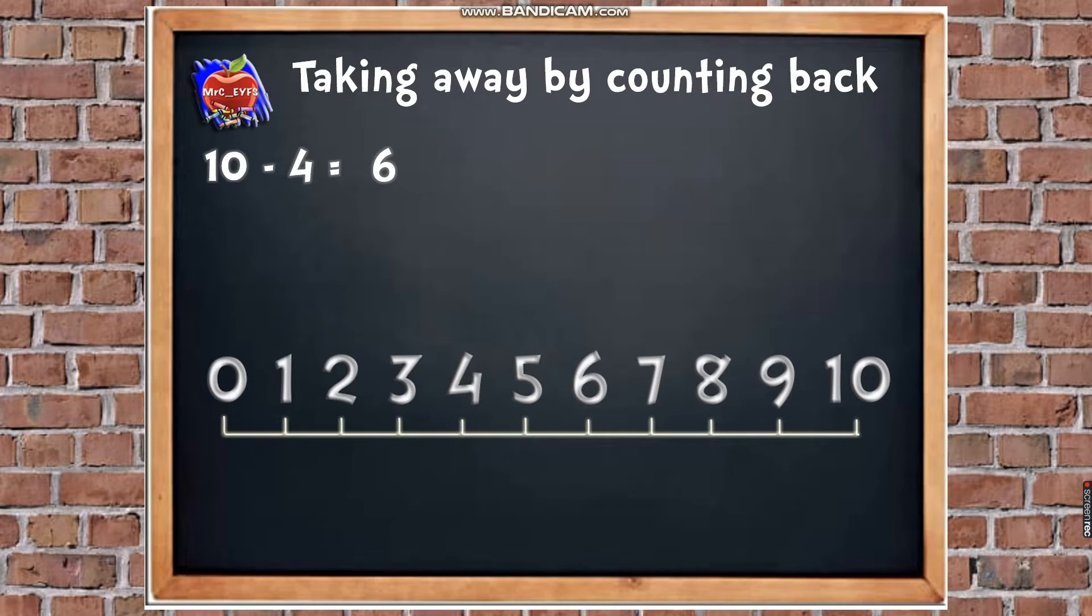Let's have another go. So we start on 10 again. So let's put that up on the board. We're going to roll the dice to see how many we have to count back. Are you ready? How many is it? 3. Excellent. So 10, take away 3, equals.